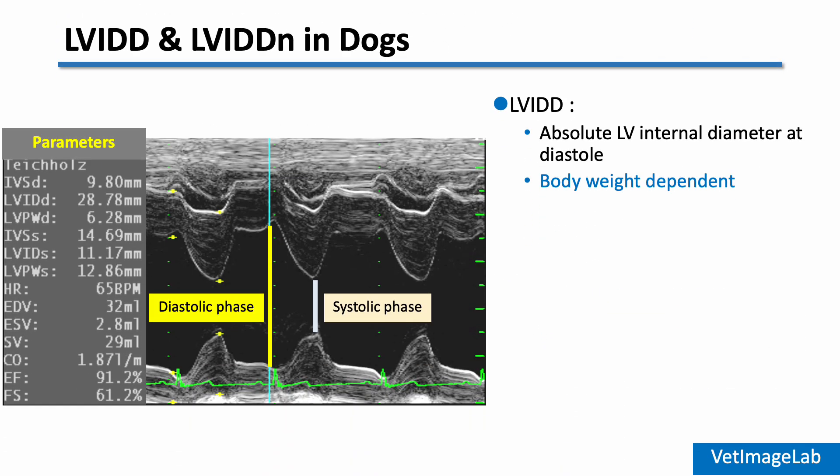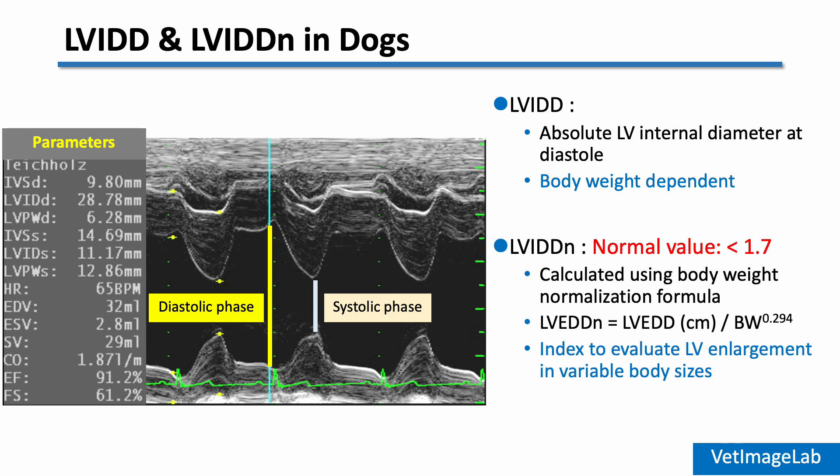Now let's talk about LVIDD and LVIDDN in dogs. LVIDD stands for the left ventricular internal diameter in diastole — a basic but essential measurement to evaluate the size of the left ventricle. Since LVIDD depends heavily on body size, we use LVIDDN, the normalized value, which adjusts LVIDD based on body weight using allometric scaling with the formula: LVID divided by body weight to the power of 0.294. A normal LVIDDN is less than 1.7, and this indexed value helps determine whether the ventricle is truly enlarged regardless of the dog's size, making it more reliable across different breeds or weight classes.